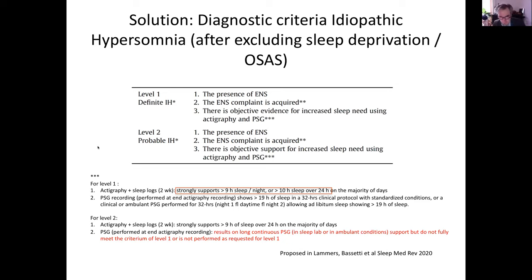For idiopathic hyposomnia, the criteria are similar but differ in the details. There must be the presence of an excessive need for sleep, it must be an acquired complaint, and it must be objectified. The difference between the two levels is the way it is objectified. The main difference with the current classification is also that we have less strict criteria — not 11 hours but 9 to 10 hours could already qualify if the other criteria are met as well.